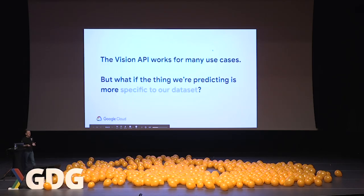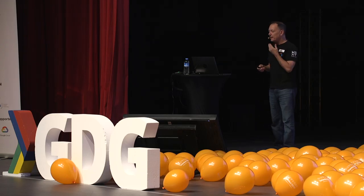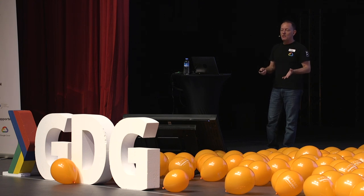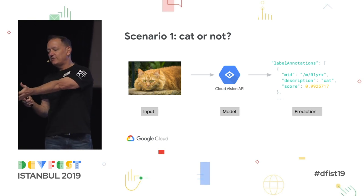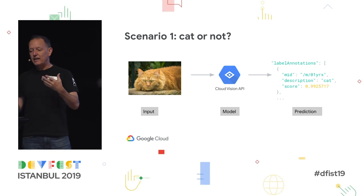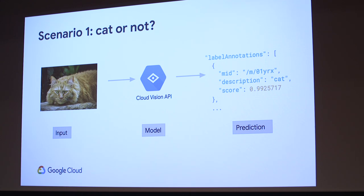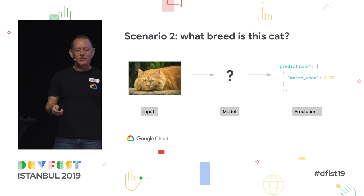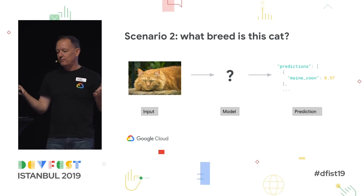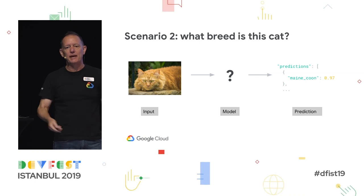The Vision API is great if the thing you want to identify is something of general knowledge using images that can be found on the web. But what if you want something more specific? We know the Vision API is good at identifying between cats and dogs, so if I want to identify whether this image is a cat or a dog, I can use the Vision API and get a prediction that says yes, this thing is a cat. But what if I want to know what breed of cat this is? We need to figure out what model to use in order to make a prediction and find out that this particular cat is a gigantic breed called a Maine Coon. But how do we build that model?